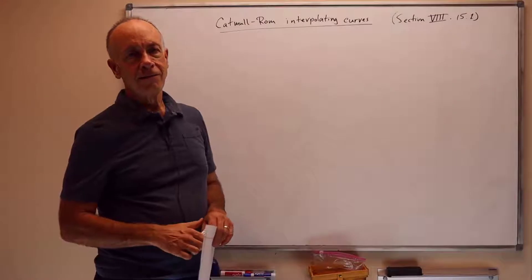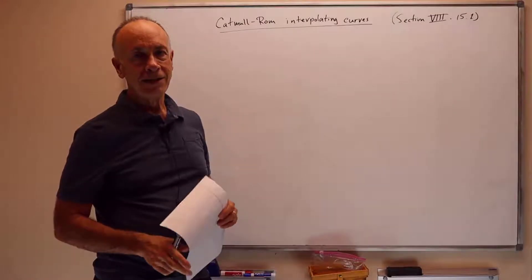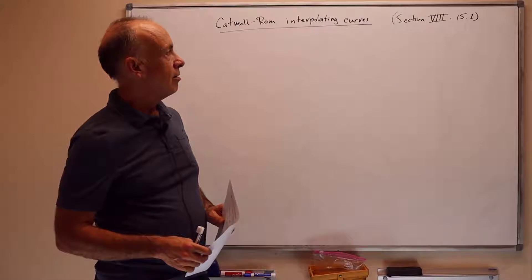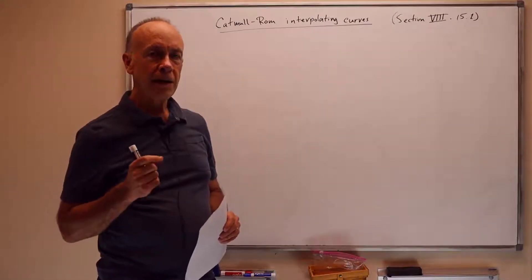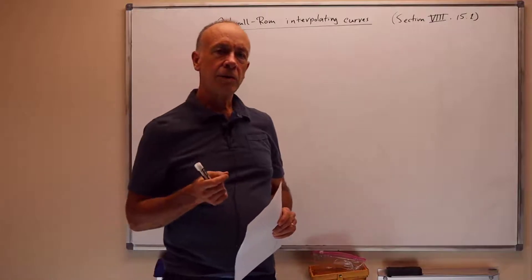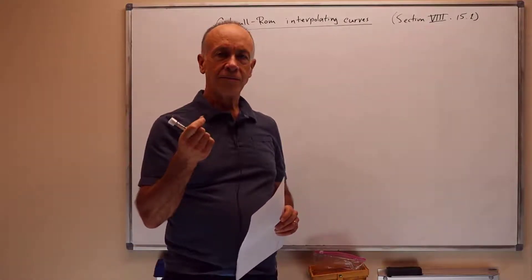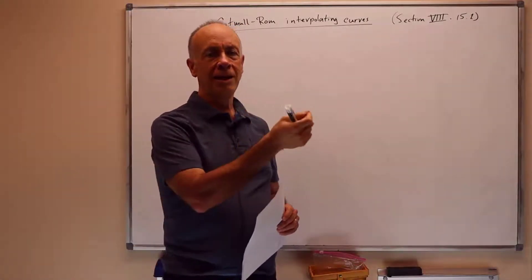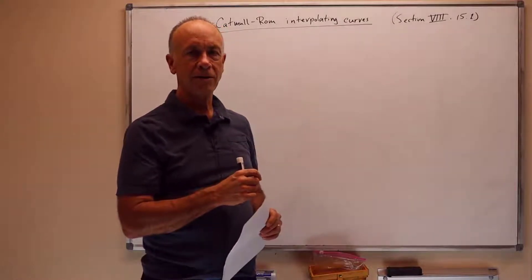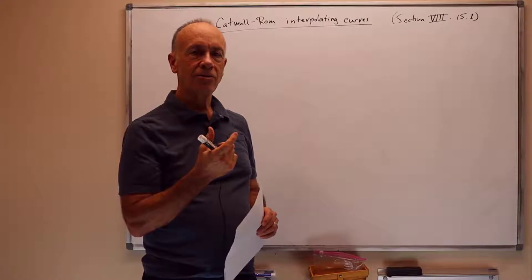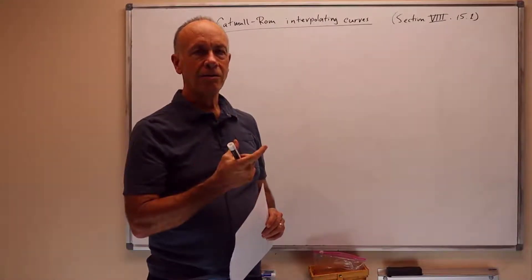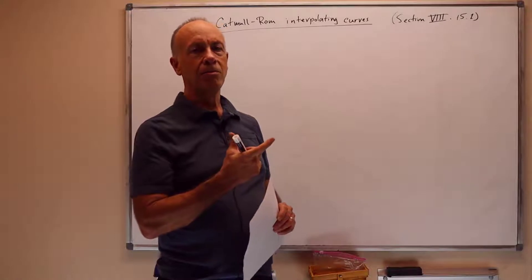Hello. This final presentation in this series of lectures will discuss Catmull-Rom curves. These are curves that interpolate or pass through points. So far, the Bézier curves we've been talking about start at the first control point P0 and at the last control point P3, since we're dealing with degree 3 Bézier curves, and the intermediate control points P1 and P2 are controlling the curve, but the curve doesn't actually go through those points.